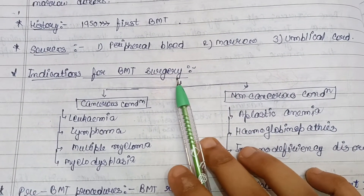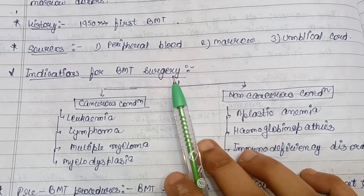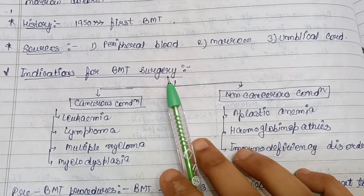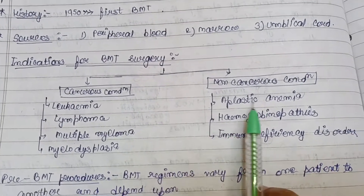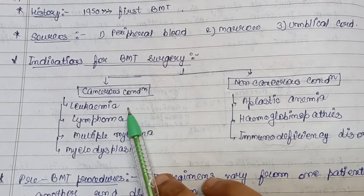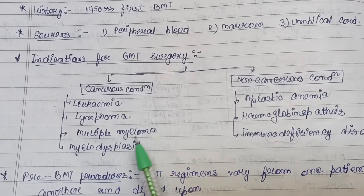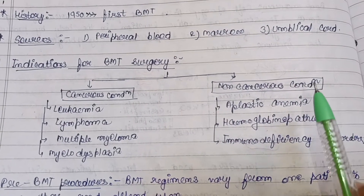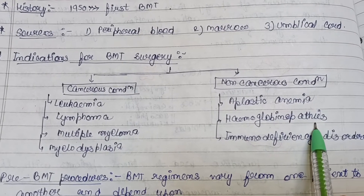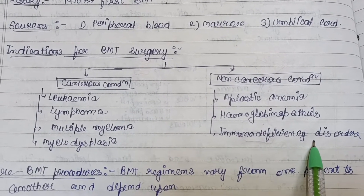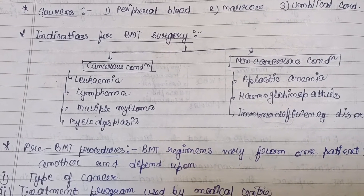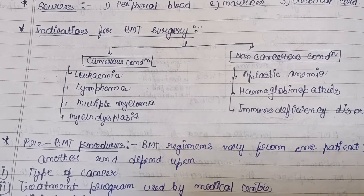Indications for BMT surgery — that is, the conditions under which a BMT is performed — fall into two categories. The first is cancerous conditions, where a patient has leukemia, lymphoma, multiple myeloma, or myelodysplasia. The second is non-cancerous conditions, including aplastic anemia, hemoglobinopathies, and immunodeficiency disorders.